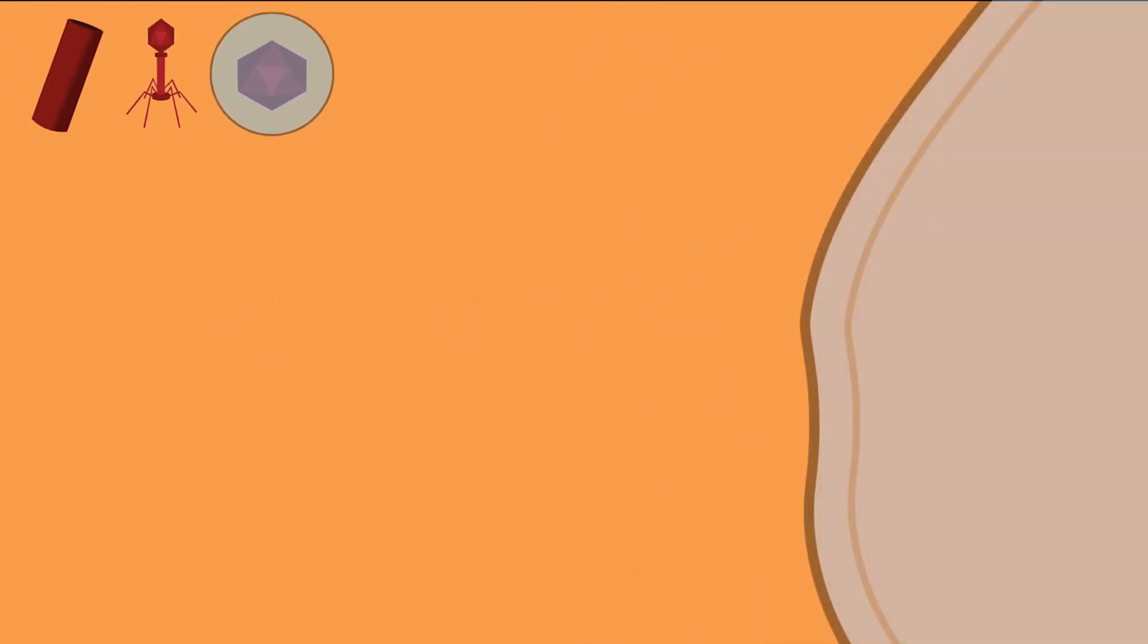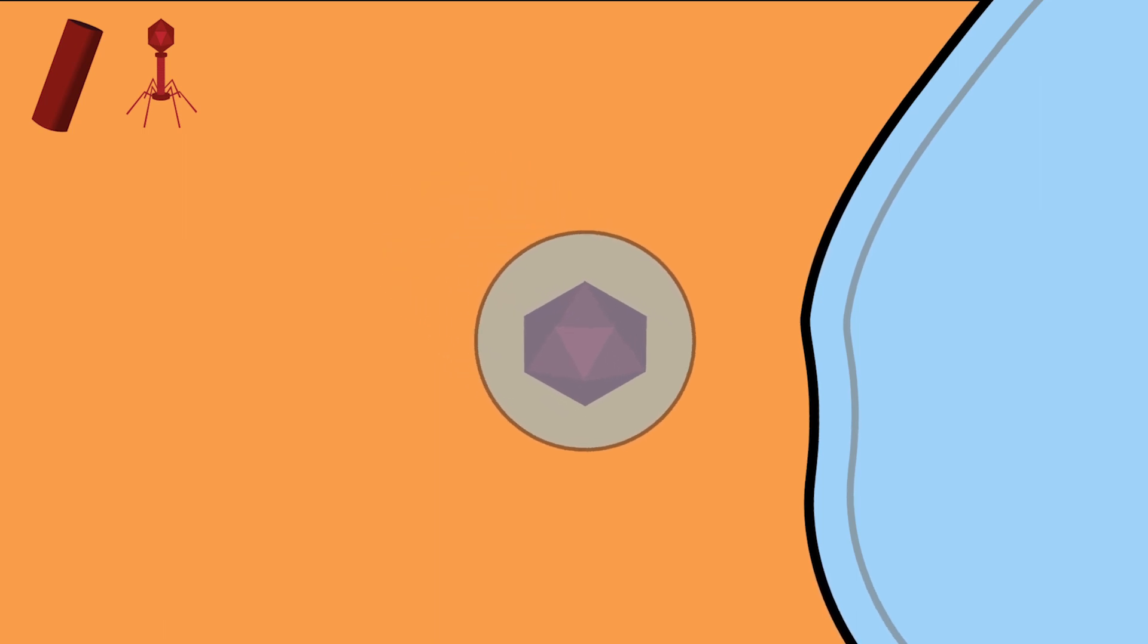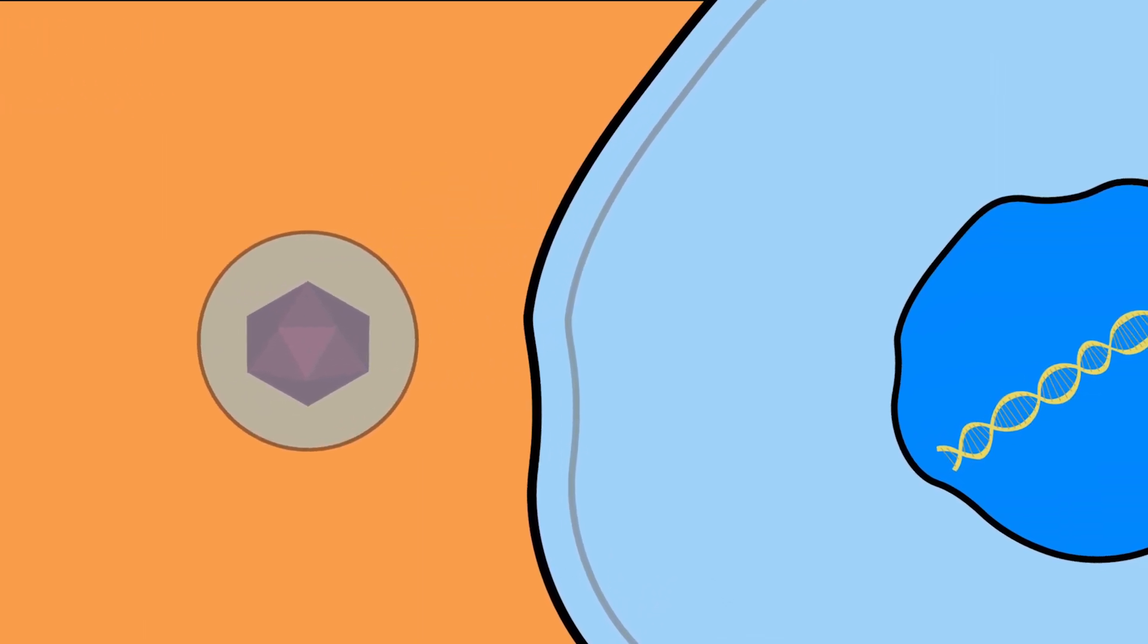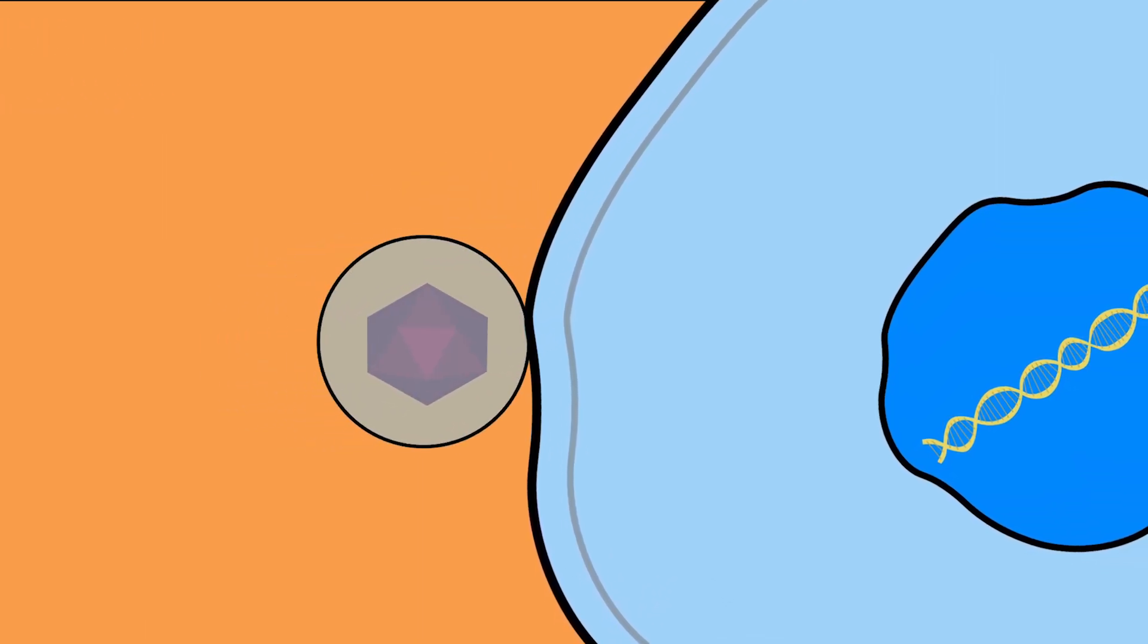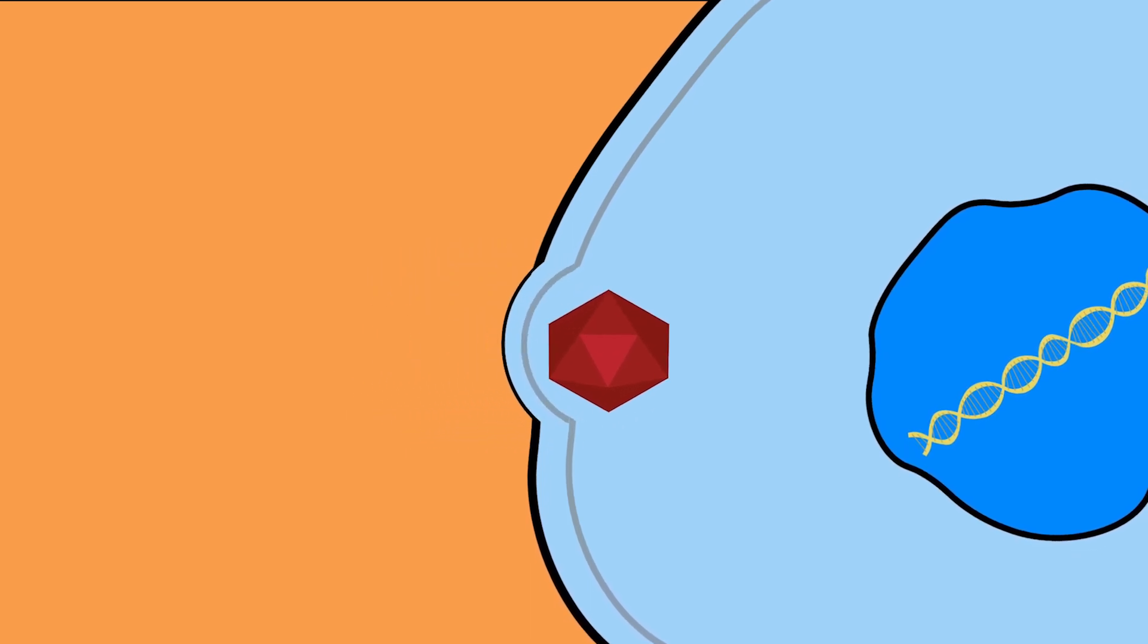Enveloped viruses, on the other hand, are surrounded by a membrane like the one on cells. This allows the virus to fuse with the cell, releasing the capsid inside.